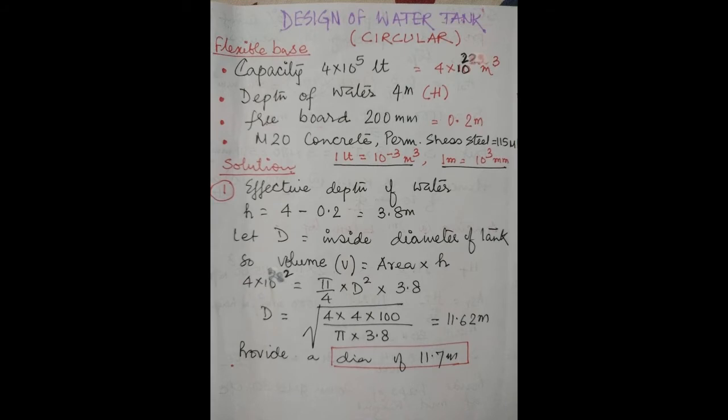Let us read the problem. Design a circular water tank with a flexible base of capacity 4 × 10⁵ liters. Depth of water is 4 meters, freeboard is 200 millimeters, and we are using M20 concrete. The permissible stress in steel is given as 115 MPa. Before starting, note the basic conversions: 1 litre = 10⁻³ m³ and 1 m = 10³ mm.